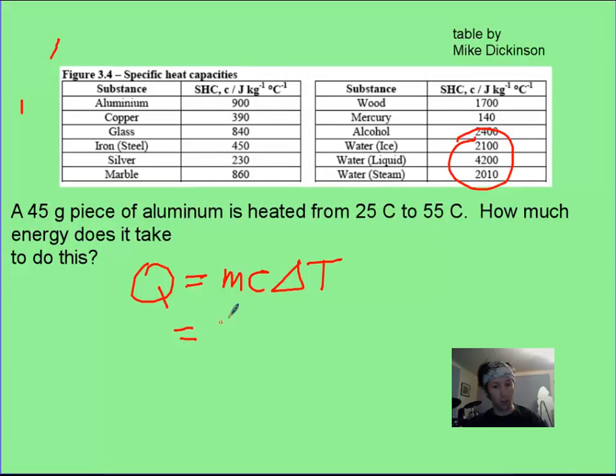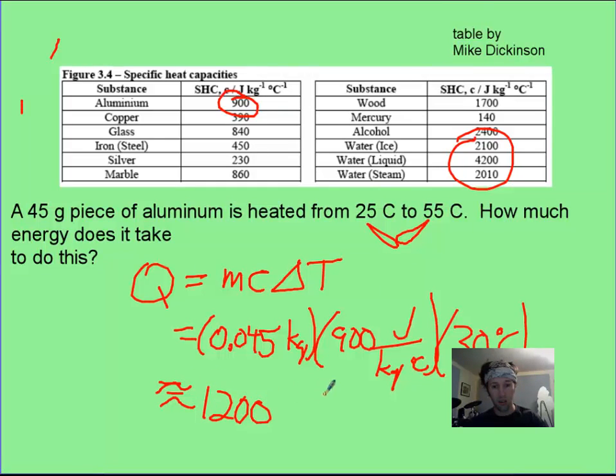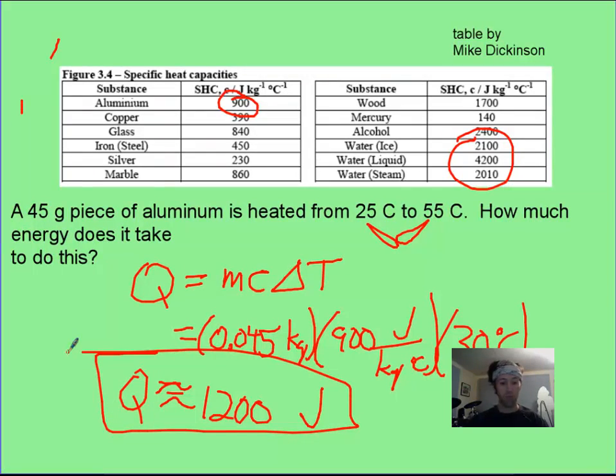And you just plug and chug with your numbers. With your mass, make sure that you've got to convert that to kilograms. And then you look up this value here, your 900 joules per kilogram degree Celsius. And your change in temperature here is going to be 30 degrees Celsius. And then you do the math and you're going to get about 1,200 joules, which is your unit for energy. Ba-boom! There you go.